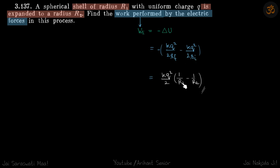rf and ri are given as r2 and r1. With the minus sign, it will become r1 and r2, which is our answer.